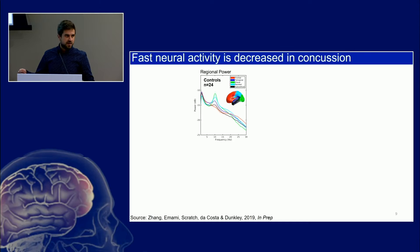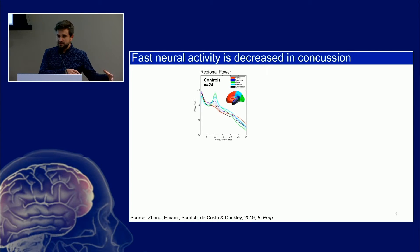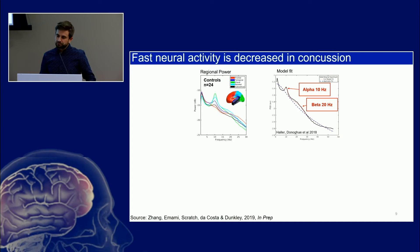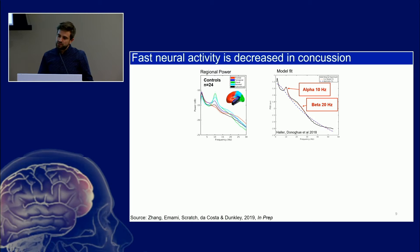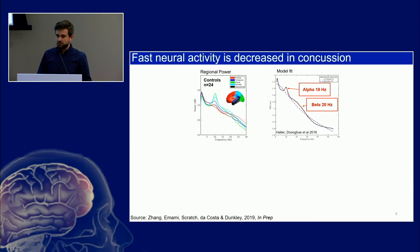We've heard some work today about MEG showing changes in the very slow brain waves measured in concussion. But looking at controls first, we used computer modeling to examine these frequency spectra and find big peaks at 10 hertz and around 20 hertz. In the EEG and MEG world, we call these the alpha and beta oscillations.